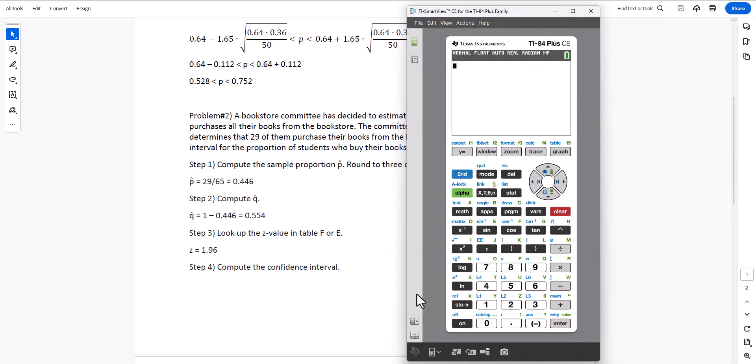Well, we have to compute p-hat, so we take 29 divided by 65. I'll round to three decimal places, 0.446. Then we compute q-hat, so 1 minus 0.446, which equals 0.554.